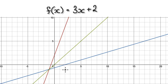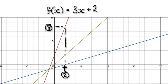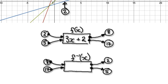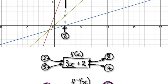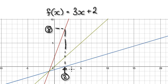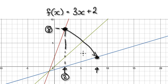So if you put in the number 2, our normal function will spit out the number 8. Now the inverse function — if you put in the number 8, it will spit out the number 2. So this point gets moved to over here.